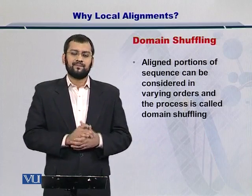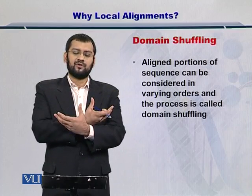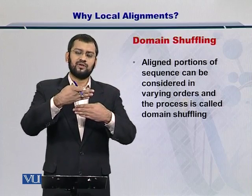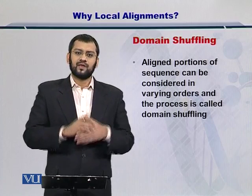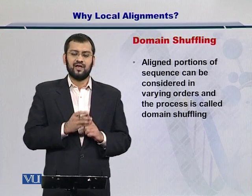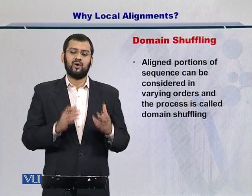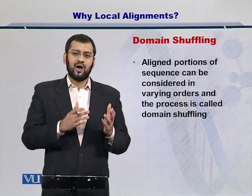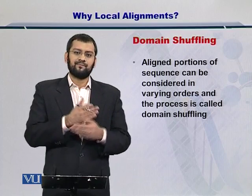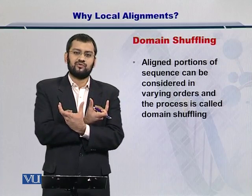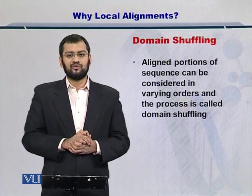It can happen that you have multiple domains in a protein but their order is different within a protein. So if you are trying to sequence-align two proteins, you may want to shuffle the different domains in the smaller protein by bringing them forward or placing them later. This may help you identify exactly the domains and find a better alignment. For example, protein X may have domain 1 and 2, while protein Y has domains 2 and 1 — only the order is reversed. This process is called domain shuffling.